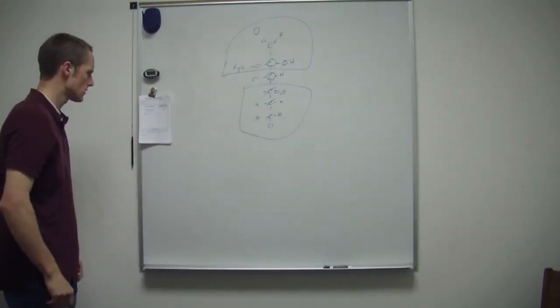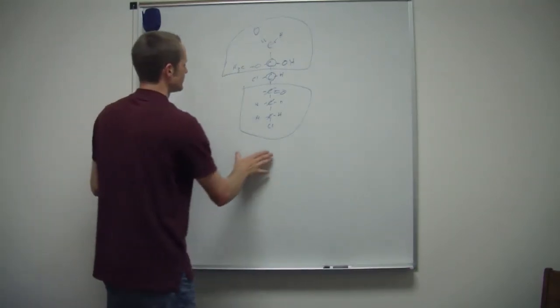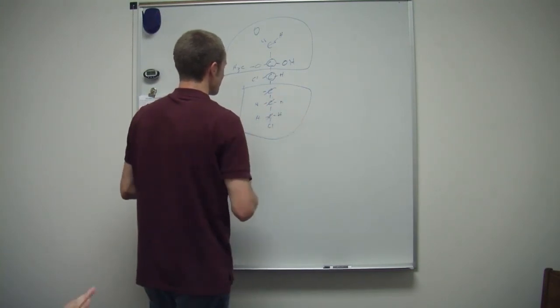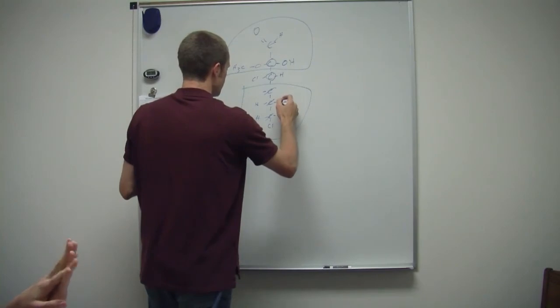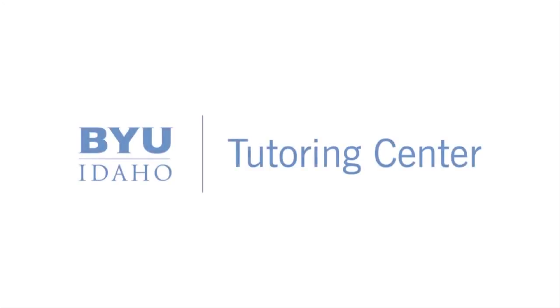And could you go over enantiomers real quick? It's two molecules that are identical, but they're not superimposable. So like you'll have a carbon - like this. Yeah, like they don't fit. Yeah, they're like your hands.